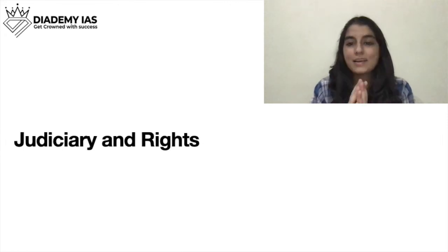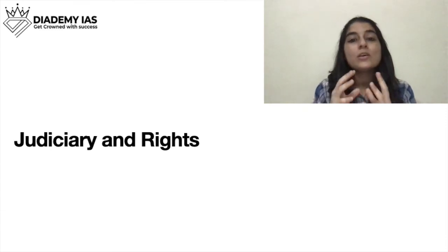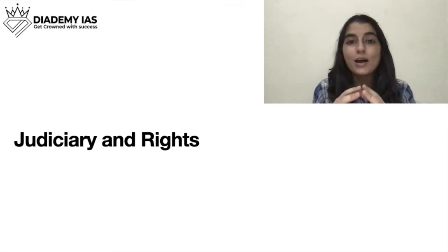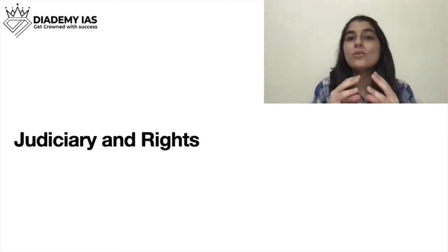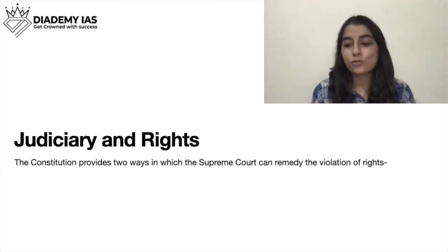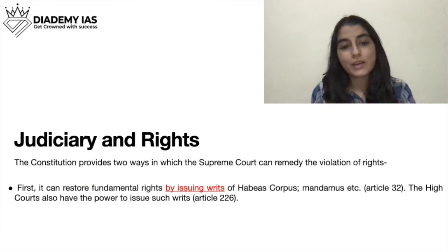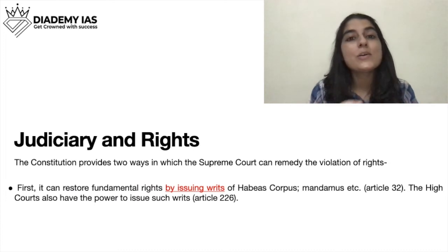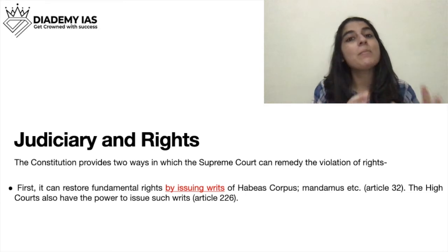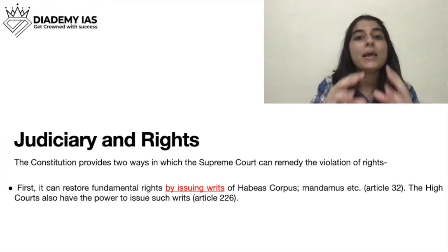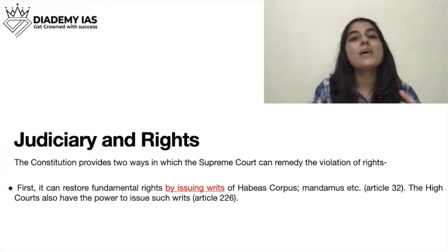Next is the judiciary and rights. Ab fundamental rights wale chapter mein hum ne yeh dekha tha that the Supreme Court or the judiciary, it is the guarantor of our fundamental rights. Humari jo fundamental rights ko protect karne ki duty hai, woh humare constitution ne Supreme Court ko di hai. Aur uske maad hum ne yeh bhi dekha that humari rights ko protect karne ke liye court ke paas kya hai — rit jurisdiction. Courts issue various kinds of writs: habeas corpus, mandamus, prohibition, certiorari, quo warranto. Yeh sab hum ne padha tha fundamental rights ke chapter mein. Toh courts jo hain woh humari rights kaisi protect karte hain? By issuing these various writs — unke paas writ jurisdiction hai.